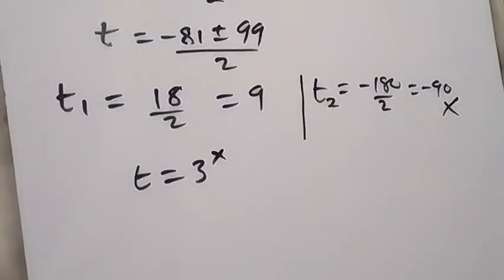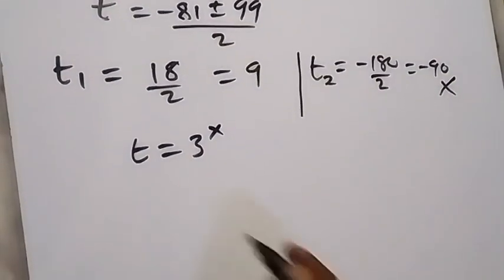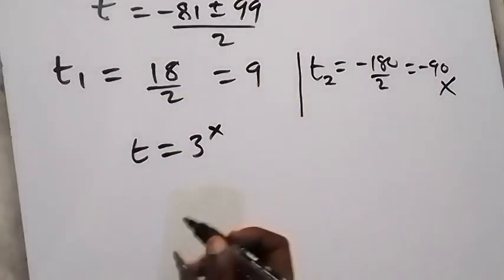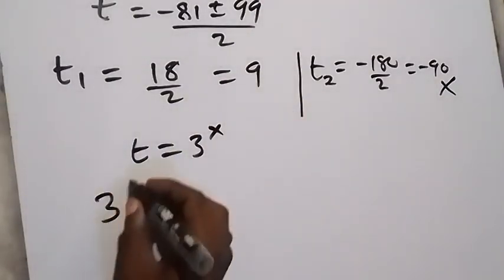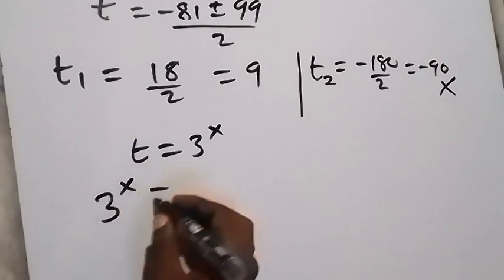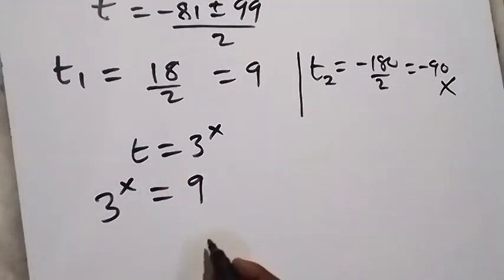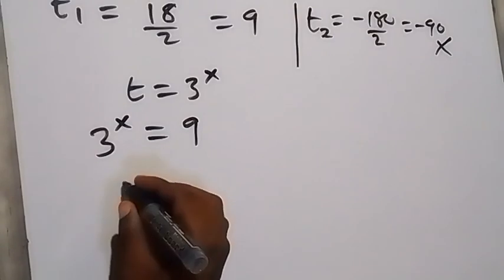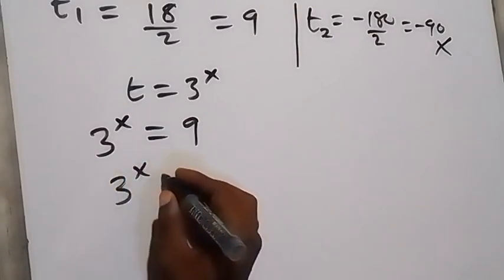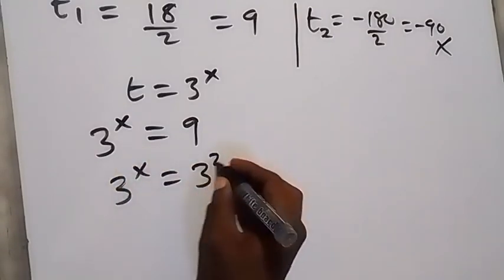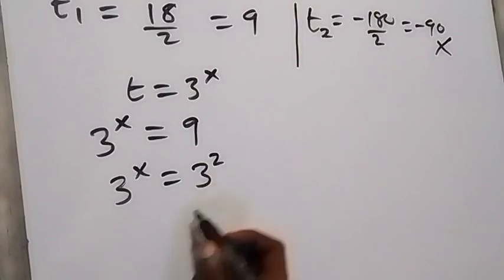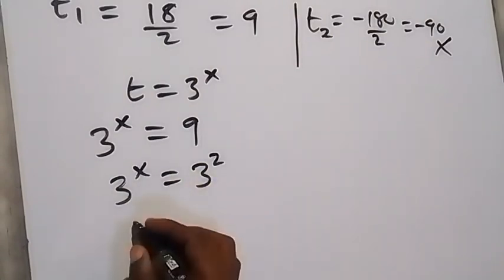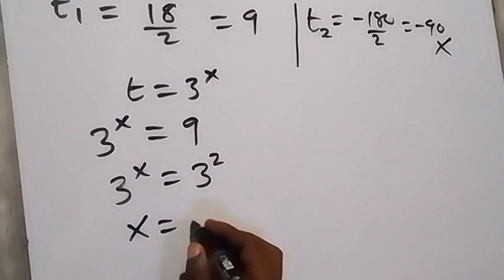Working with t equals 9: since t equals 3 raised to power x, we have 3 raised to power x equals 9. We change 9 to base 3 — 9 is 3 squared. The bases are equal, so we equate the powers, giving x equals 2.